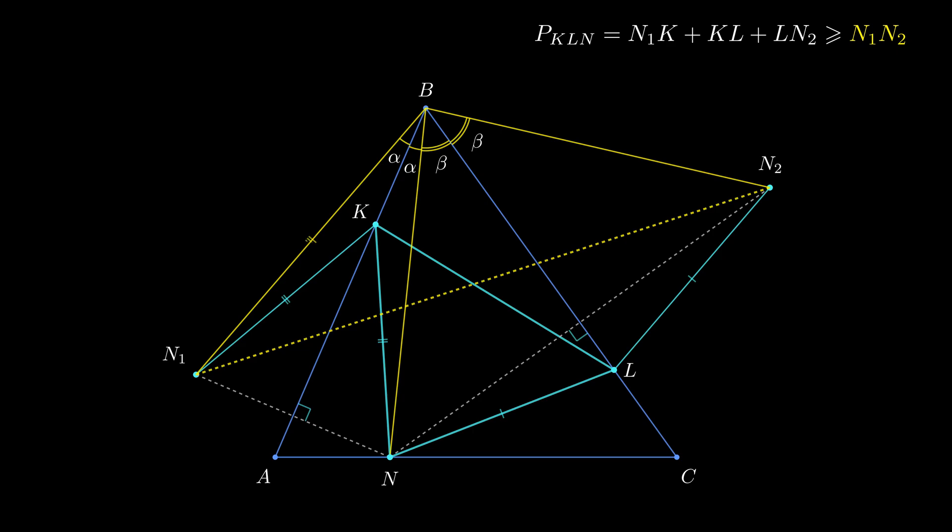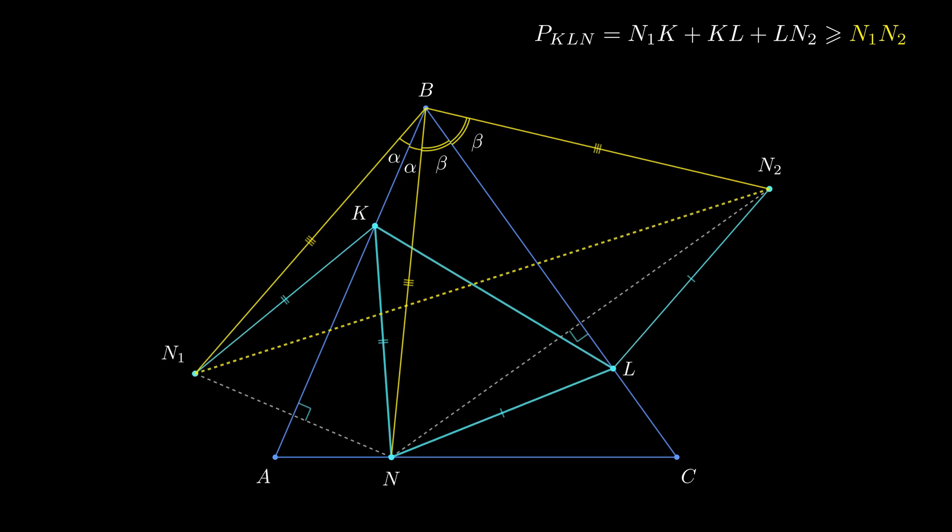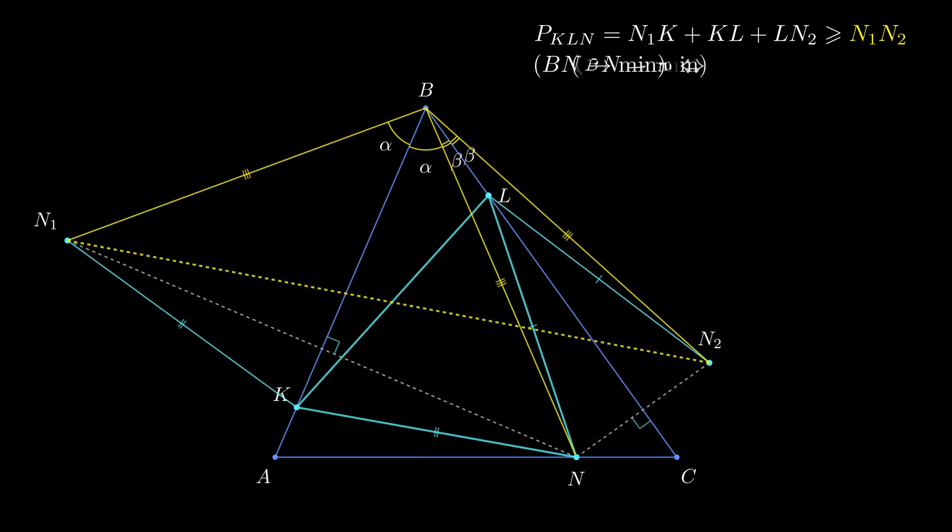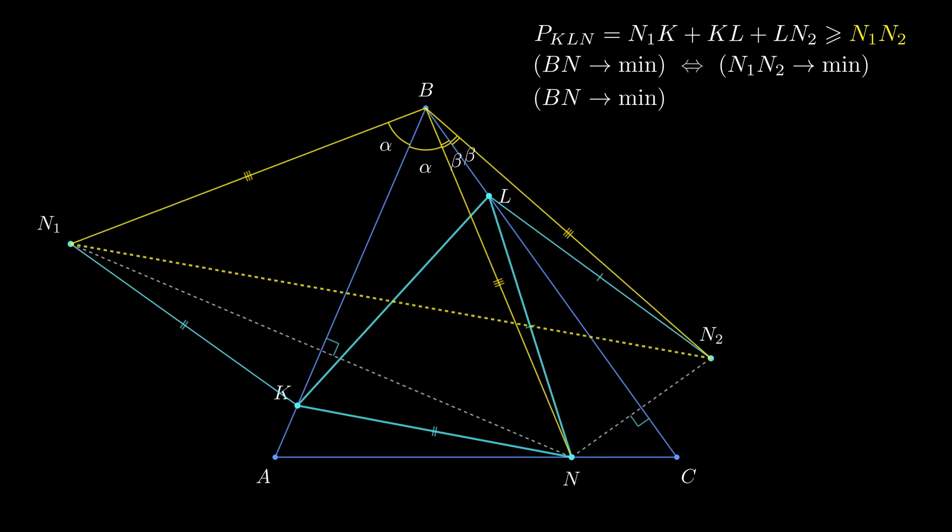Who knows under what condition the minimum can be achieved? Look, all three of the highlighted segments due to the symmetry are equal. It means that the smaller the length of BN, the shorter the segment N1N2. But when is BN at its minimum?